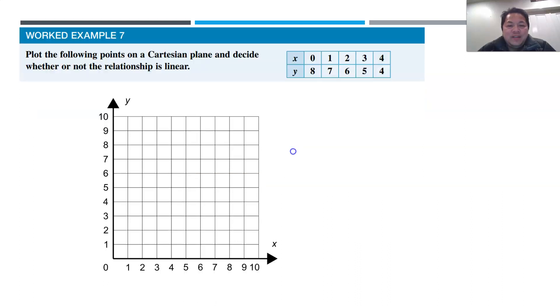What about another one? You have 0, 8, 1, 7, 2, 6, 3, 5, and 4, 4. So 0, 8 is there, 1, 7 is here, 2, 6 is there, 3, 5 is here, and 4, 4 is here. And I put the line together, you actually form a straight line, isn't it? So again, the relationship between x and y is linear for this case.